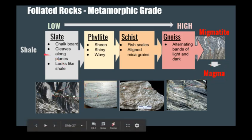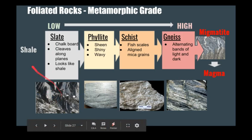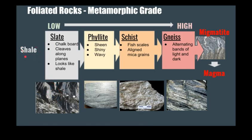Here's a picture of each. Slate used to be used for chalkboards — imagine a chalkboard or a nice pool table. It cleaves along nice planes and looks a lot like shale, which is a sedimentary rock. You can often metamorphose shale to get slate. Slate has a little bit more of a clinky sound when you knock it together. Phyllite is the next level up from slate, and the good way to identify it is the sheen — I like to use the analogy of catfish skin. It's shiny and kind of wavy, like a smooth fish.